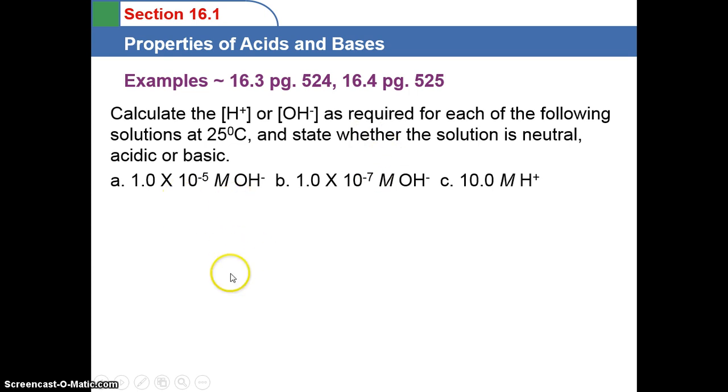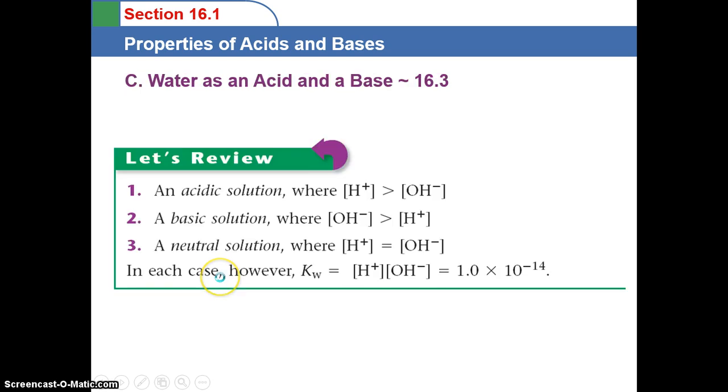We're going to start with the first one, 1 times 10 to the negative 5th molar of hydroxide ions. It says to calculate the H+ or OH- as required, so in this example, it gives us the OH-, and it wants us to calculate the H+ ion concentration. Now, there's something you need to remember, and that comes from the slide before this.